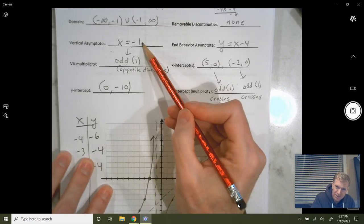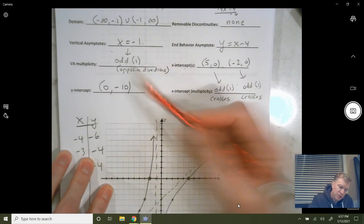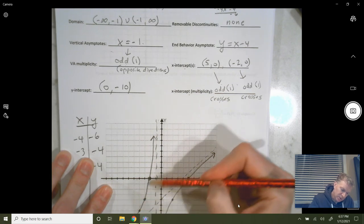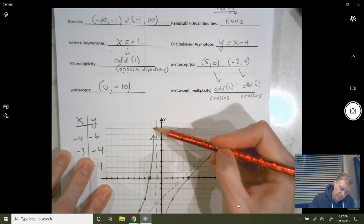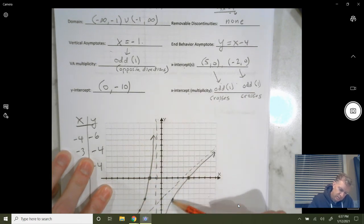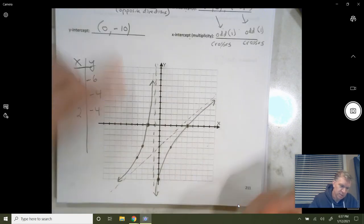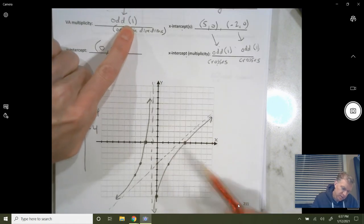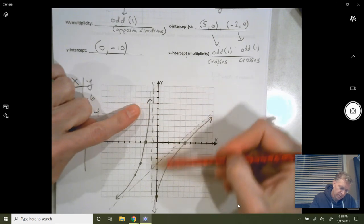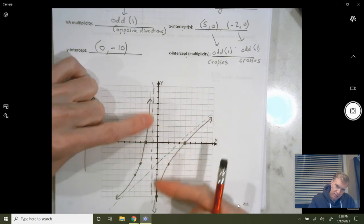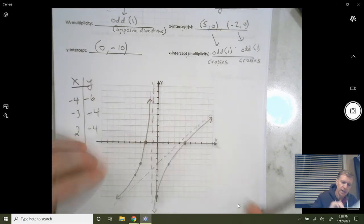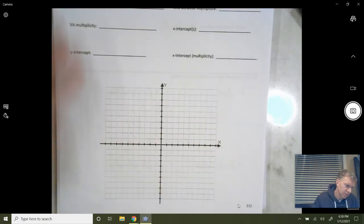And the vertical asymptote, x equals negative 1. As you approach this line, x equals negative 1, from the left, you're going up towards positive infinity. And from the left, I'm sorry, from the right, you're going down towards negative infinity. So approaching this asymptote, because it has an odd multiplicity, you can see your graph is going to be going in opposite directions as you approach that asymptote. All right. And I might as well do the other one, 212.